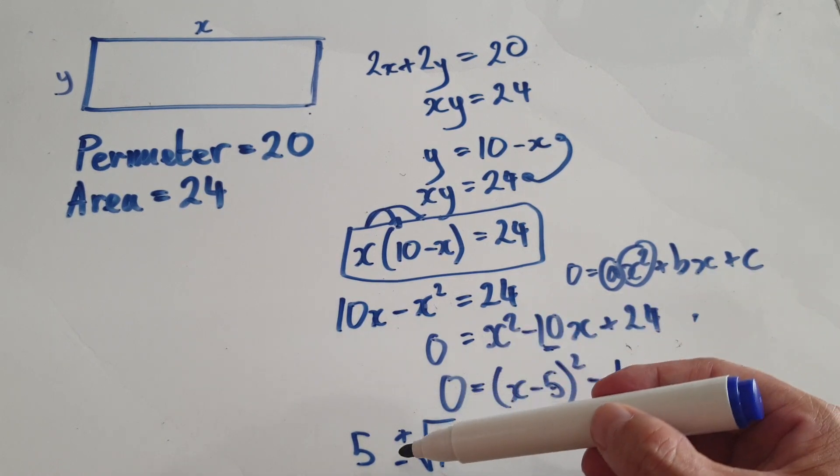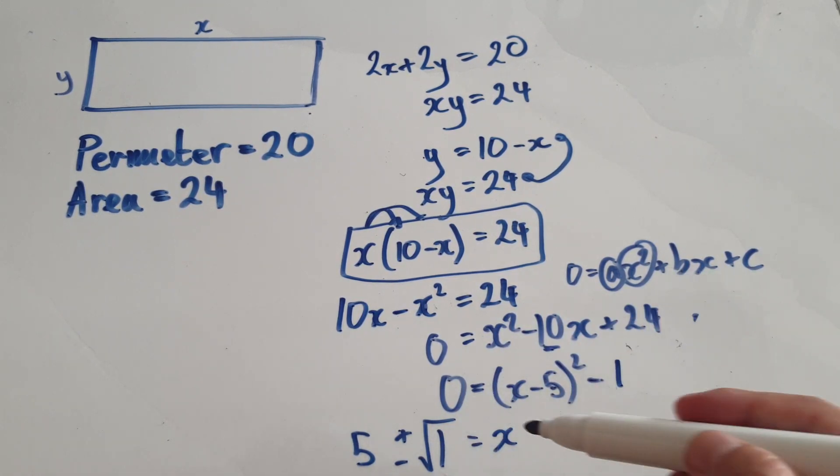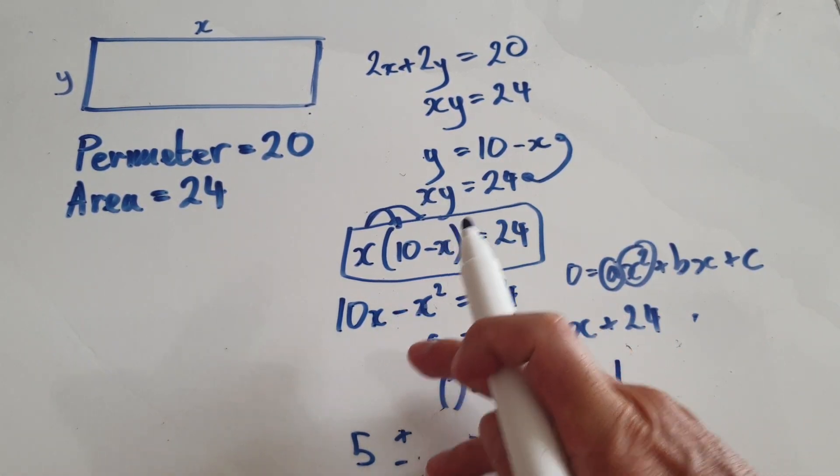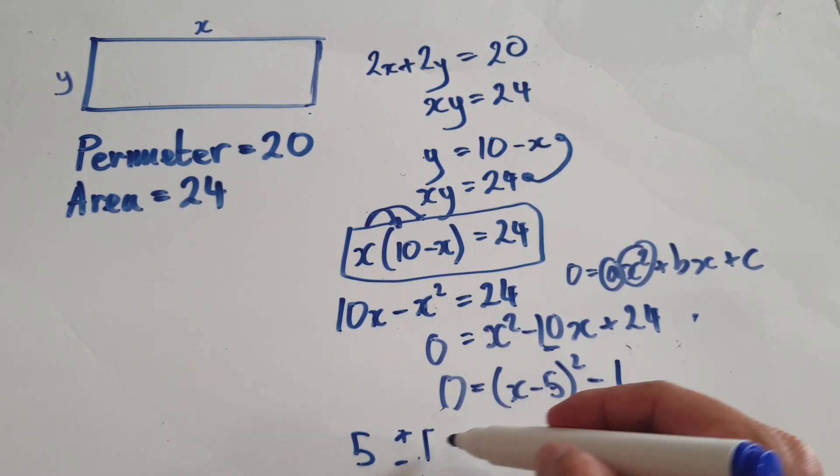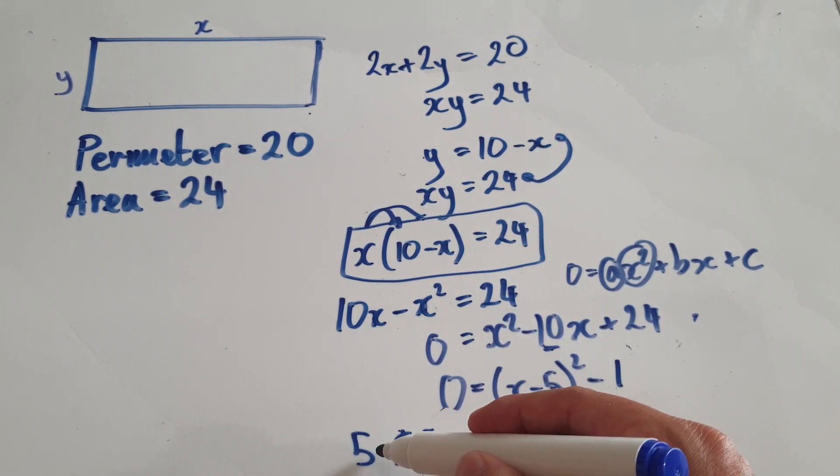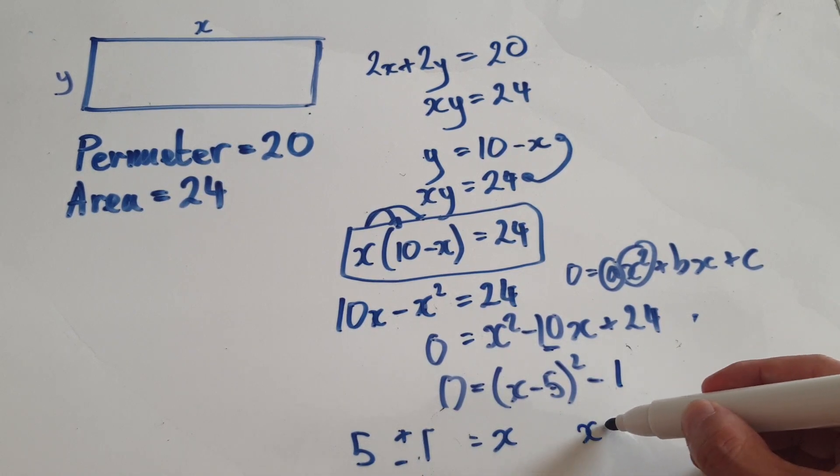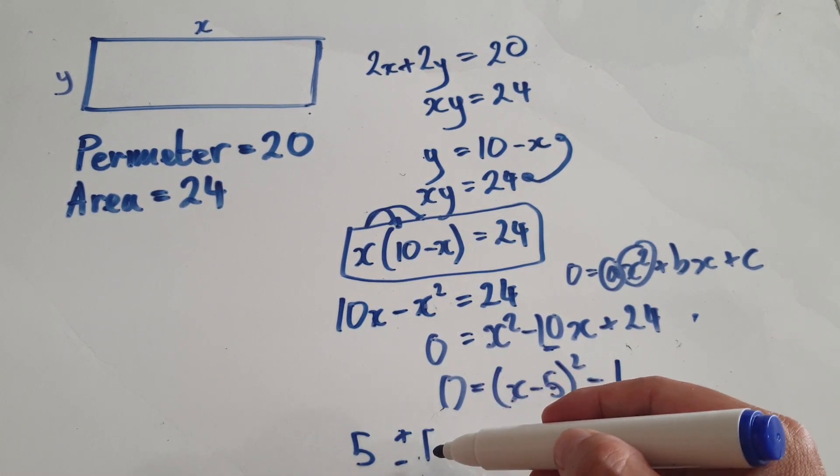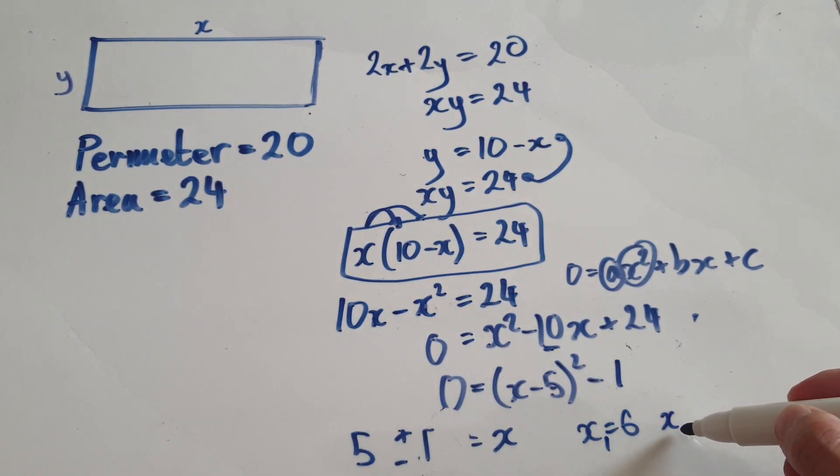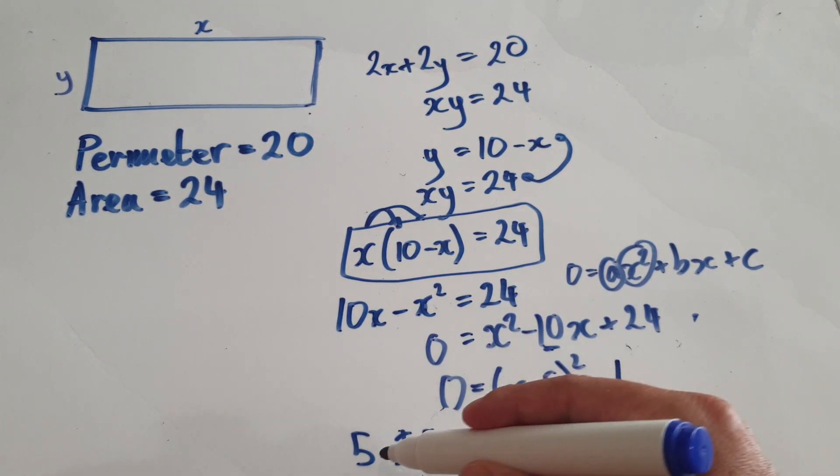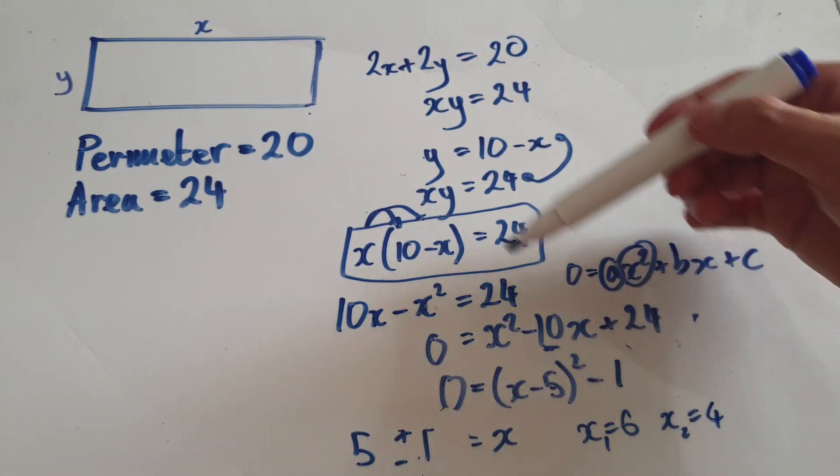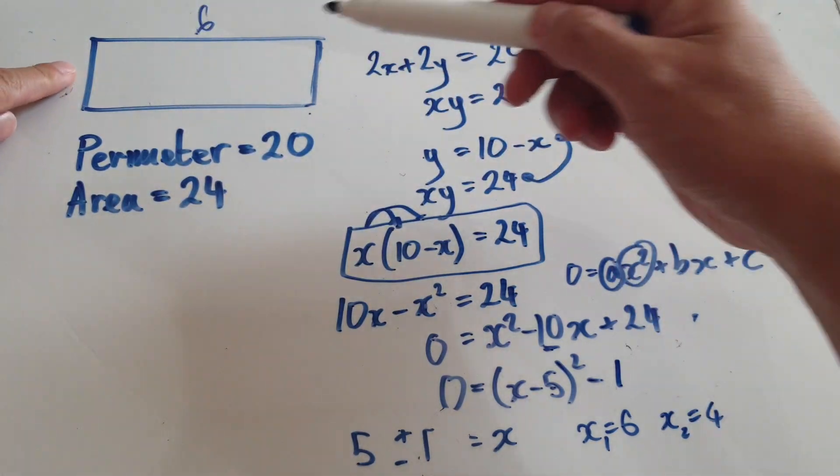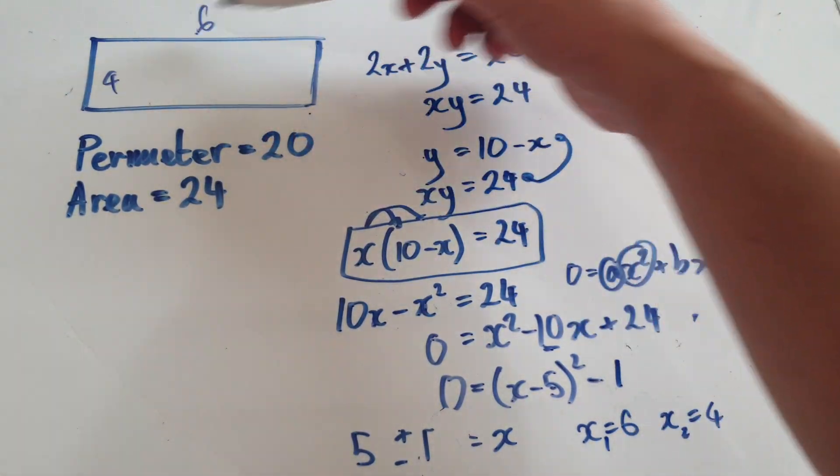So what that means is from here you can see that x is—root one is one—so x would be, there are two values of x: x could be five plus one, so x could be six, or it could be five minus one, which would be four. You see, this thing here will have a length of six and a height of four. Now you can see that the perimeter will be 20 and the area is 24.